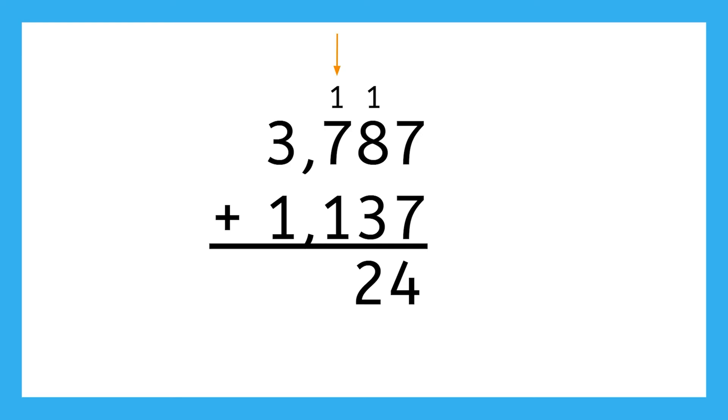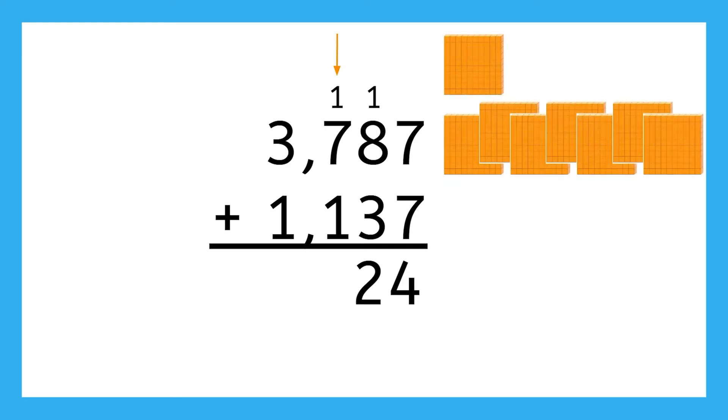When we check out the hundreds place, we have one hundred, plus seven hundreds, plus one hundred. That equals nine hundreds. I mean, we've had to regroup for all the other places, should we just regroup this one too? Well, it is a one-digit number, which means we can just record that digit in the hundreds place of our answer.